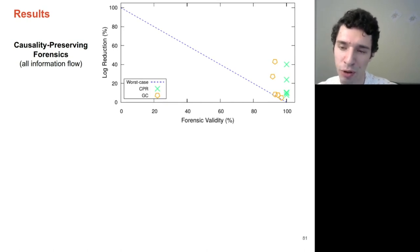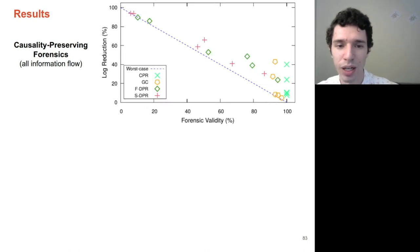LogGC, on the other hand, is a bit more aggressive, actively deleting information it believes is irrelevant to the current state of the system, and therefore gets forensic validity of about 90 percent while achieving comparable reduction rates. In contrast, full and source dependency-preserving reductions only care about a specific analyst's goal, and therefore they have wildly varying forensic validity that goes between 40 to 94 percent. However, because they only care about this specific goal, they're also able to achieve extremely high reduction rates, as much as 94 percent.